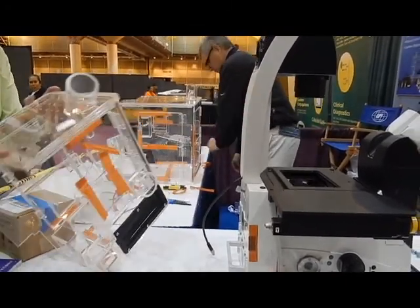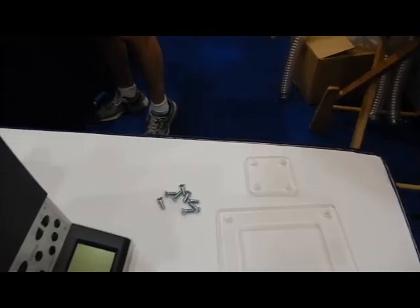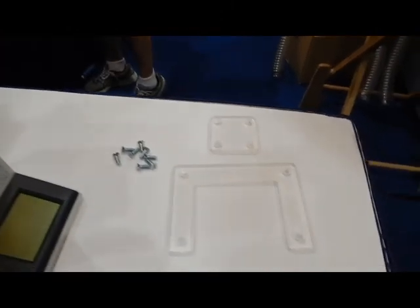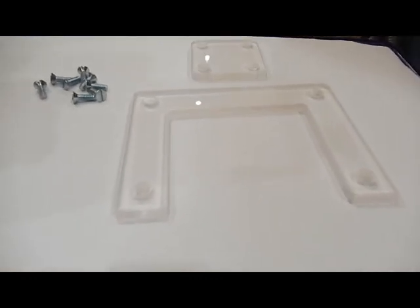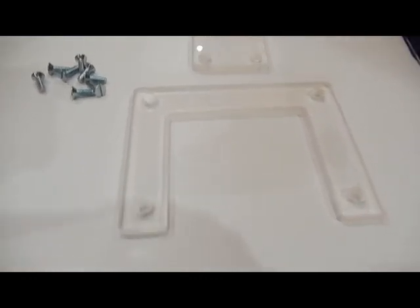The microscope enclosure comes in two halves. The connector plates and screws, which are taped to the bottom of one of the chamber halves, are used to join the two sides of the enclosure.